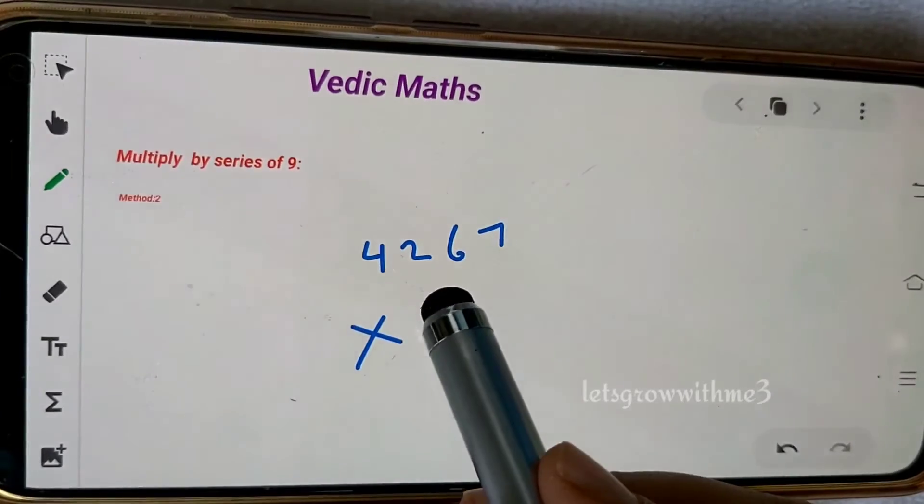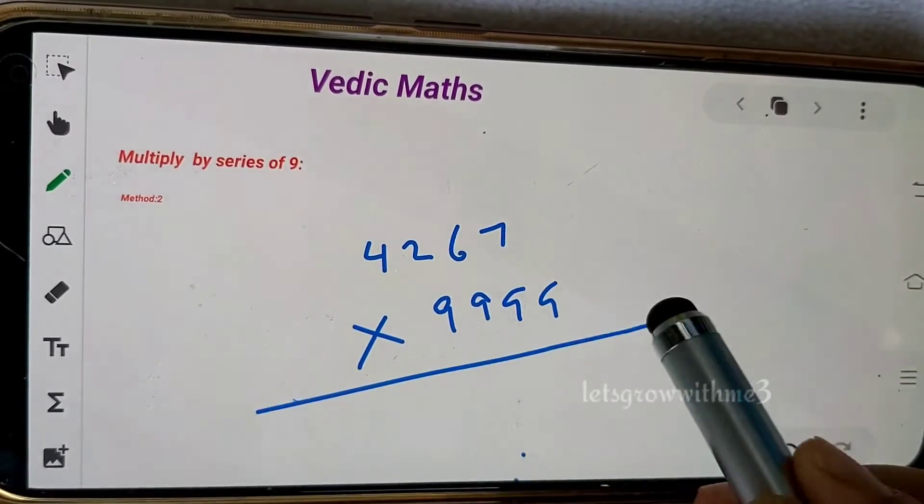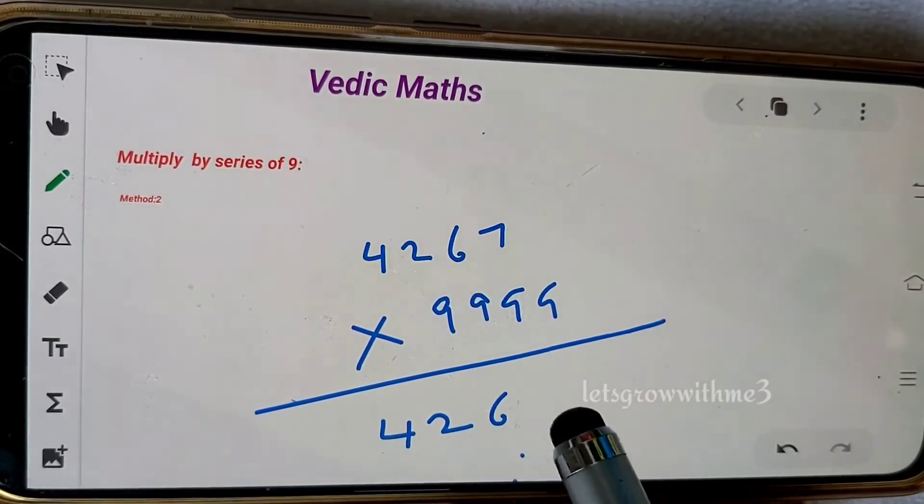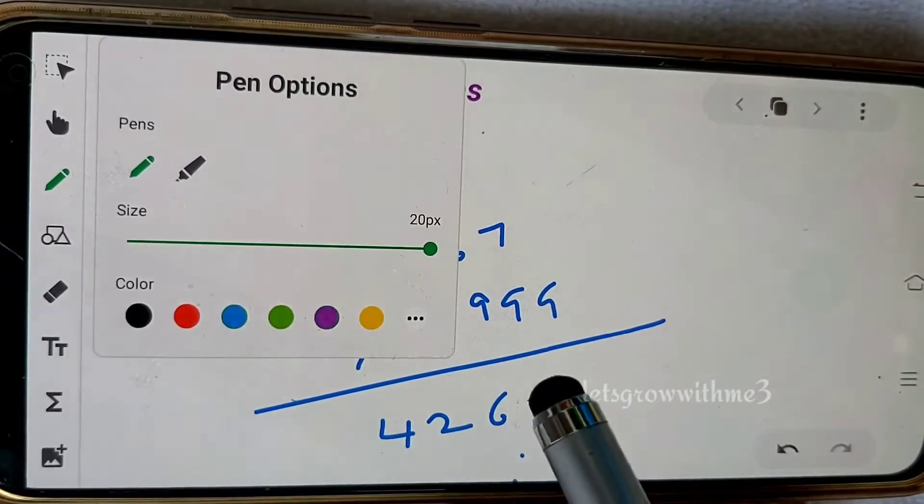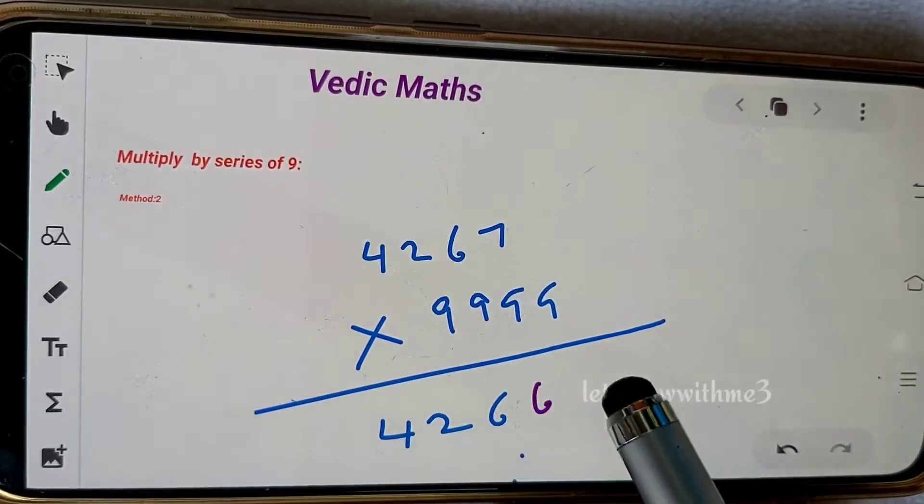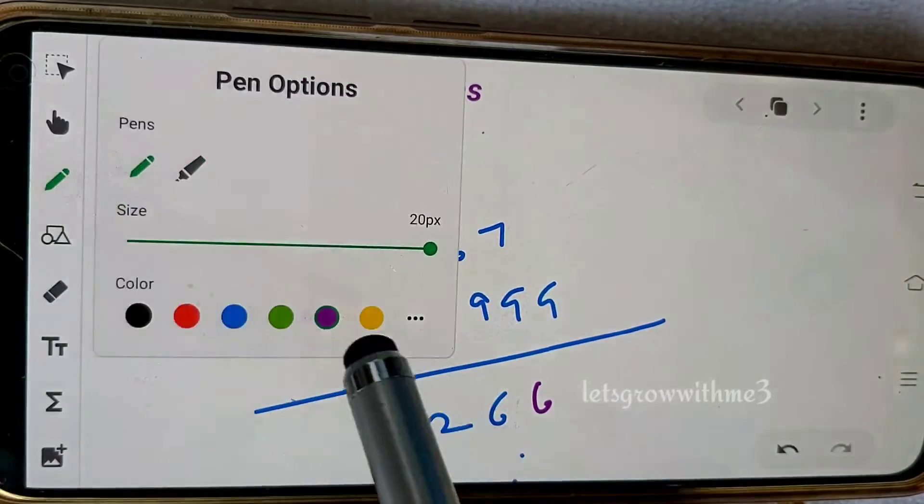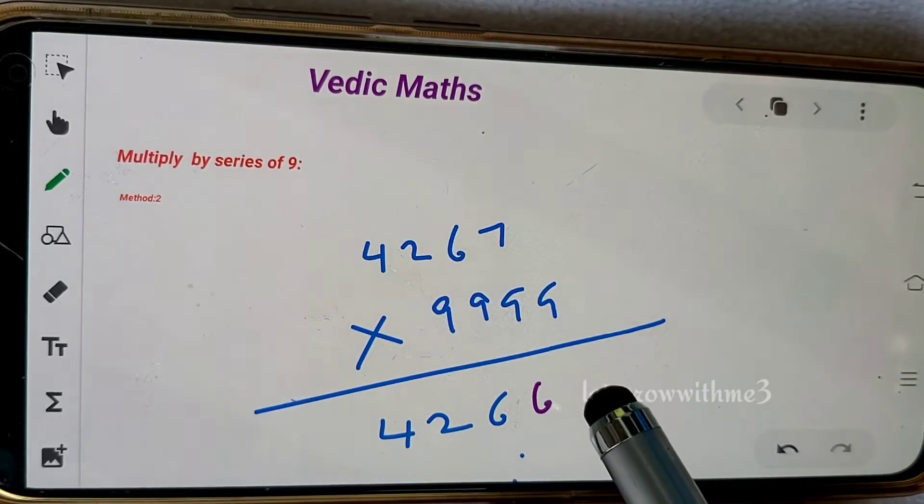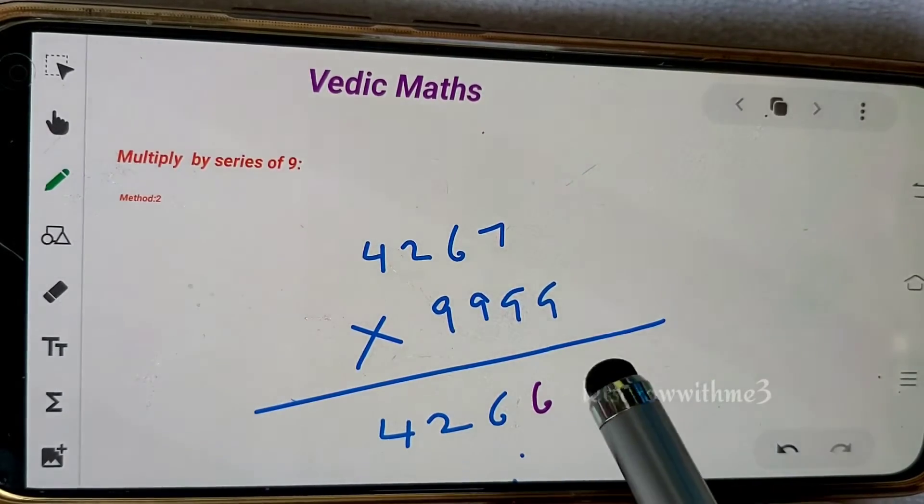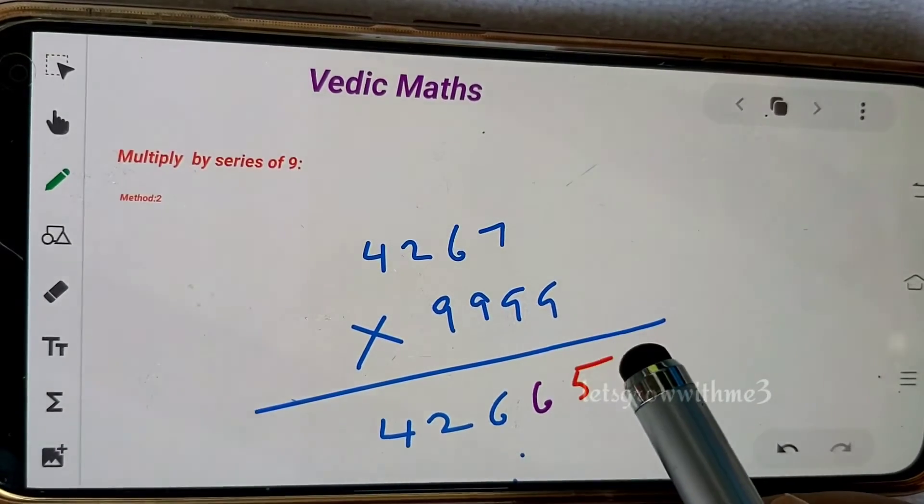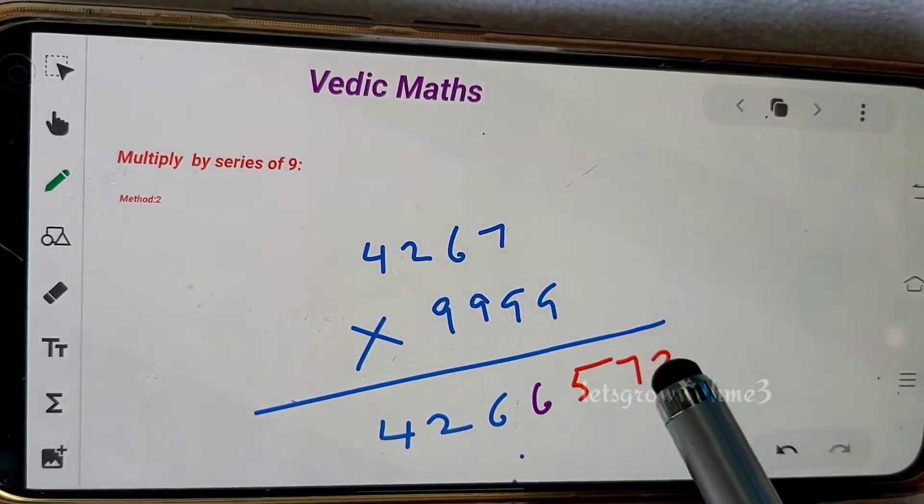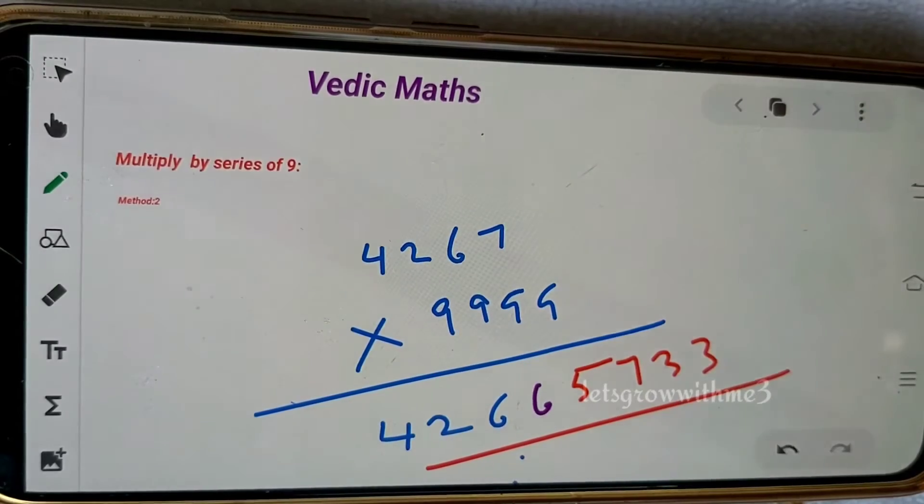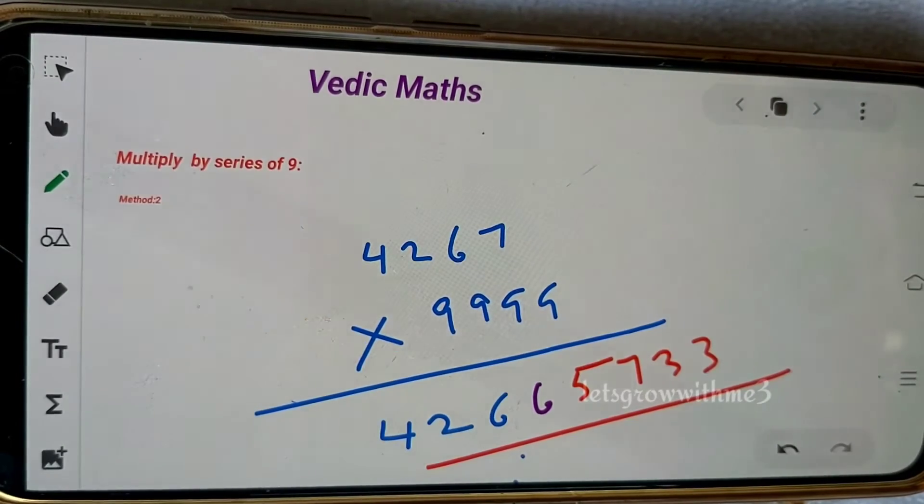4267 times 9999. So 426, and then 7 minus 1 which is 6. Then we need to do complement to this number: 4 plus 5 is 9, then 2 plus 7 is 9, and 6 plus 3 is 9. That's our answer. Very simple, right? Let's do one more question.